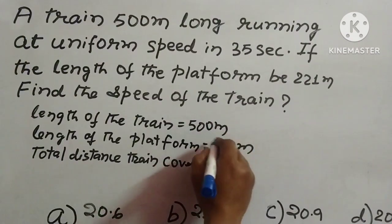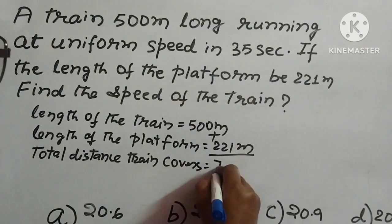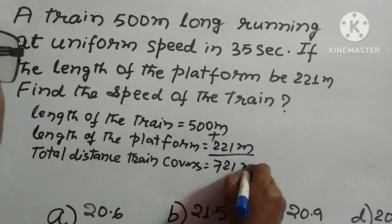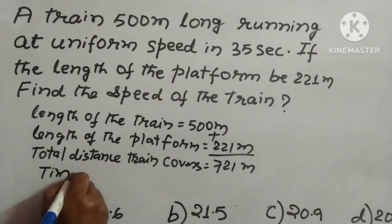You have to add 500 and 221. This is the total distance train covers: 721 meters. And time is given 35 seconds.